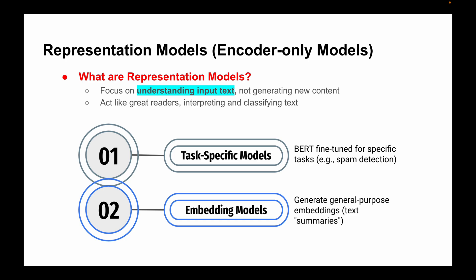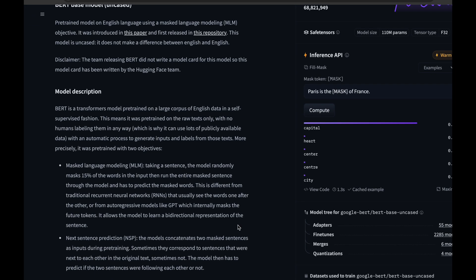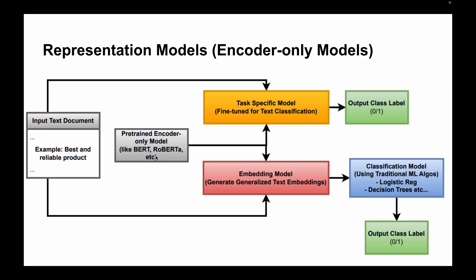Both these methods use the power of representation - the model's ability to capture the meaning of text and classify it based on what it has learned. Here's an in-depth diagram showing how to use representation models for text classification. Let me simplify it. We have an input text document. We need to select a pre-trained encoder model like BERT or RoBERTa. You can go to the Hugging Face website and select any pre-trained encoder model.